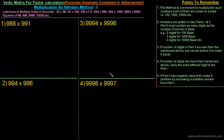Welcome to the class on adding maths. In this class we will extend our discussion of multiplication by the Nikhilam method. In the previous class we learned the basics of the Nikhilam method and the multiplication of two numbers closer to the base hundred. In this class we will learn to multiply two numbers which are closer to either one thousand, ten thousand, or more than that.